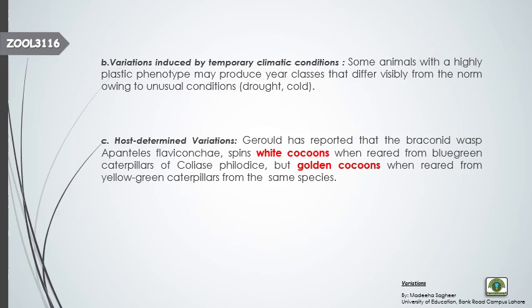The third type of ecological variation is host-determined variation. In host-determined variation, variations occur due to a change in the host — the host determines what kind of variation will be produced. For example, the braconid wasp Apanteles flaviconchae produces white cocoons when feeding on blue-green caterpillars, but when the same wasp feeds on yellow-green caterpillars, it produces golden cocoons. Cocoons are the silky protective coverings produced by the larva for protection.